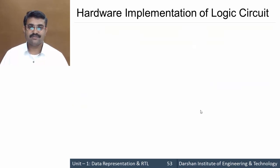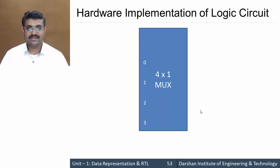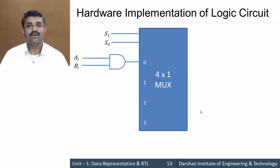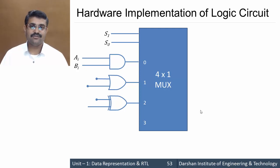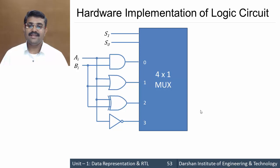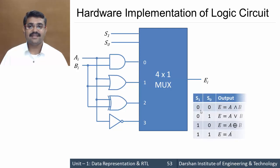Let's see a basic hardware implementation of this logic circuit considering only four operations: AND, OR, exclusive OR, and complement. We use a 4×1 multiplexer, which requires two select lines. To the 0th input line we connect the AND operation of bits Ai and Bi; to the first line, the OR operation (Ai OR Bi); to the second line, exclusive OR (Ai XOR Bi); and to the third line, the complement operation (A complement).